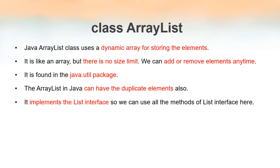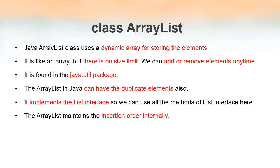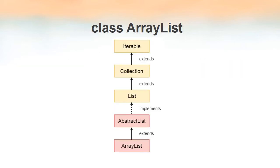ArrayList is one of the classes that implements the List interface, which we discussed in the previous class. ArrayList implements List interface, which means all the methods inside List interface have an implementation inside this ArrayList class. It maintains an insertion order internally, though it is not visible externally.